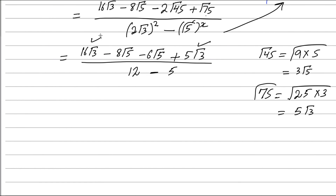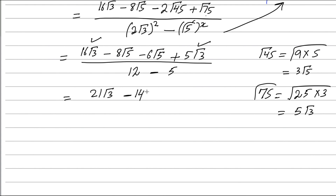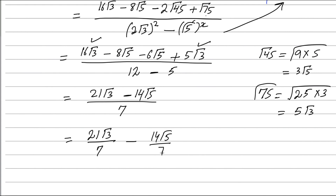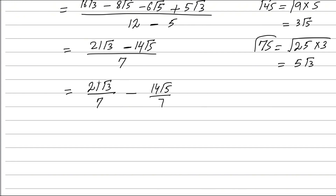Now collect the like terms. The square root 3 terms add together to give 21 square root 3, and the middle values are like terms so they add to give minus 14 square root 5, all divided by 7. This denominator divides each term: 21 square root 3 divided by 7 minus 14 square root 5 divided by 7. Cancelling gives 3 square root 3 minus 2 square root 5.